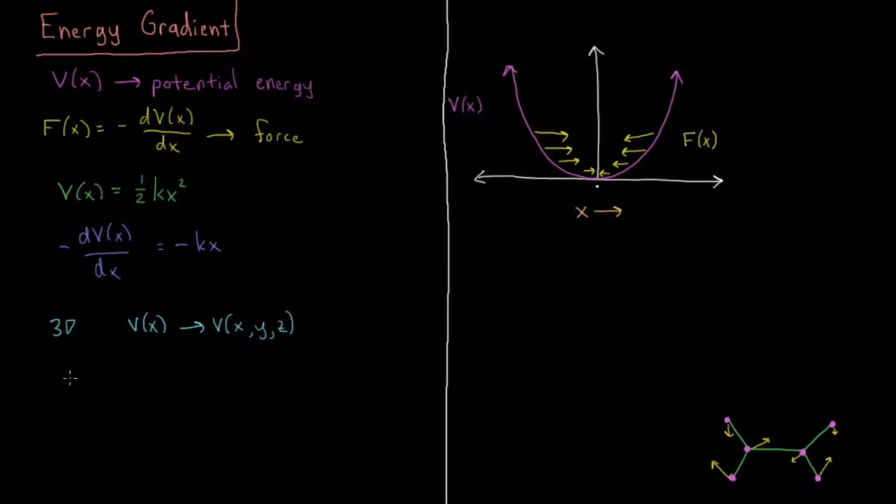So when we do our minus dV dx in three dimensions, that will become negative partial derivative of V with respect to x times the x unit vector plus partial derivative with respect to y in the y direction plus partial derivative with respect to z in the z direction.